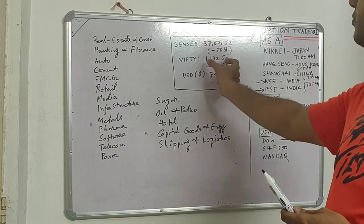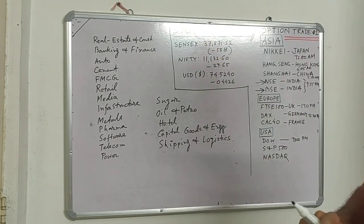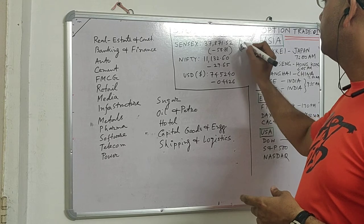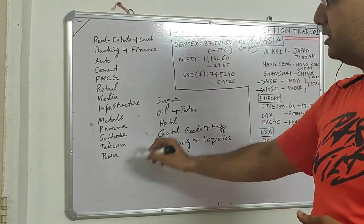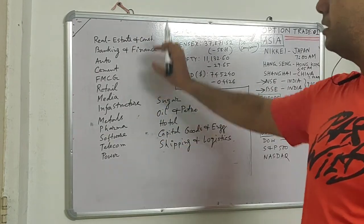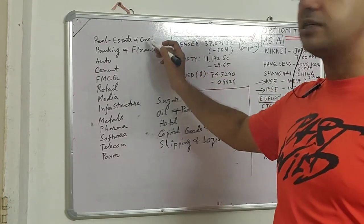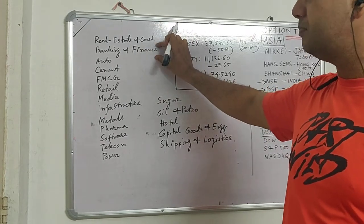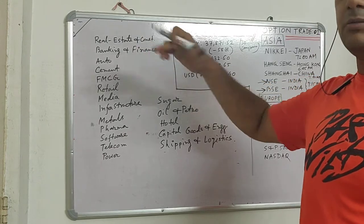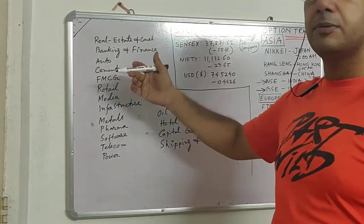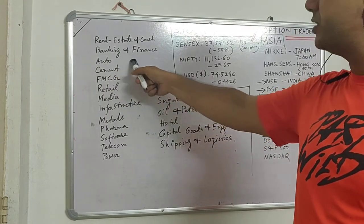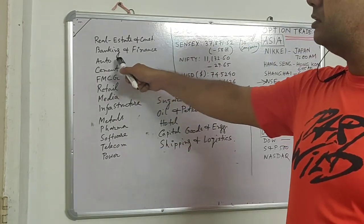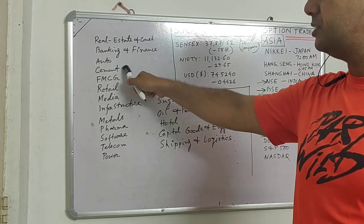The Sensex is based on a calculation using 30 companies from critical areas. All companies are divided into sectors: real estate and construction, banking and finance, auto — including car manufacturers, bike, scooter manufacturers, tire and auto parts. Cement manufacturing companies, and FMCG — fast-moving consumer goods.